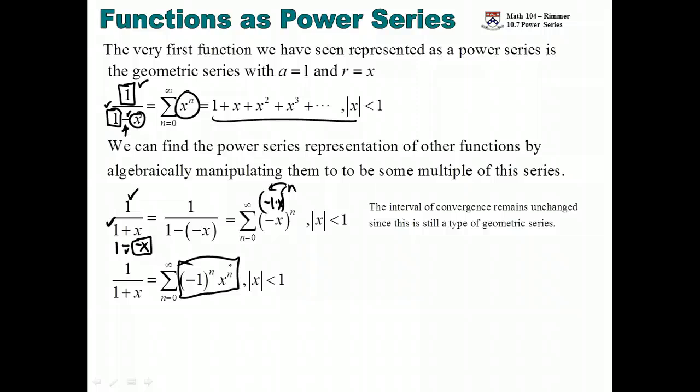It's the same series you started with, but now the signs alternate. So instead of being 1 plus x plus x squared plus x cubed, it's 1 minus x plus x squared minus x cubed plus x to the fourth. So every odd degree term has a negative on it. So now we know a second series and a second function and a series that represents that.